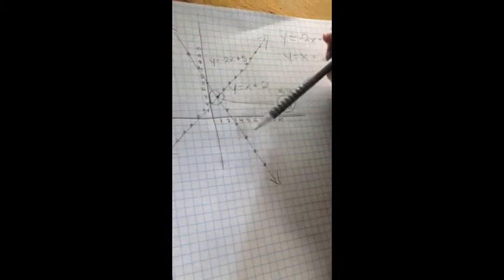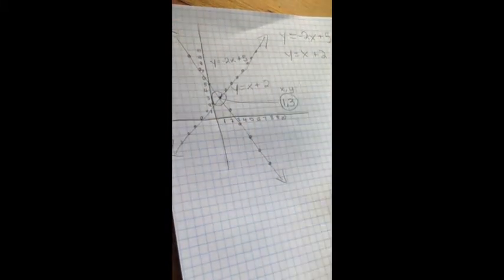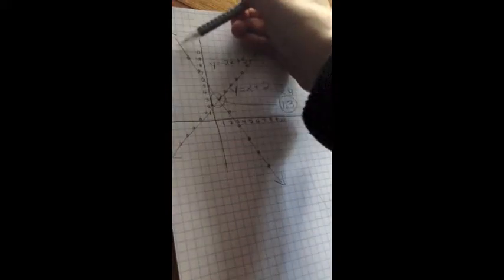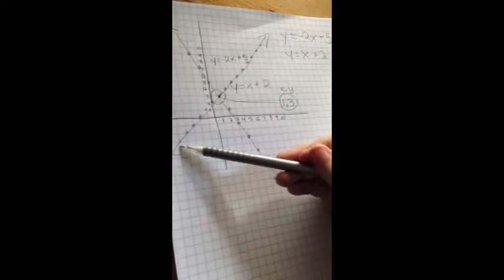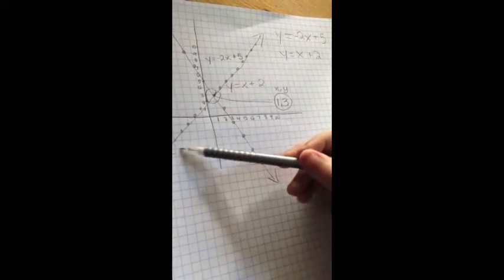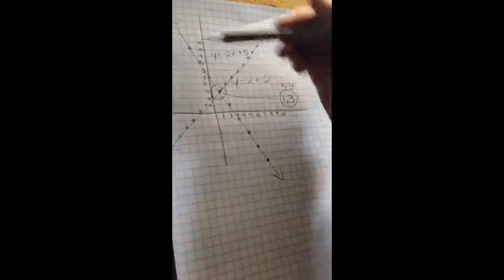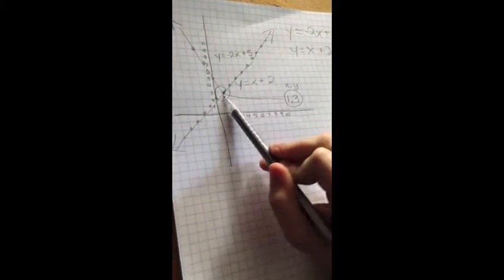This line represents y equals negative 2x plus 5. You know it's a negative equation because the line is going down. This line represents y equals x plus 2, and it's a positive line going up. Both equations met in the middle at point 1, 3.